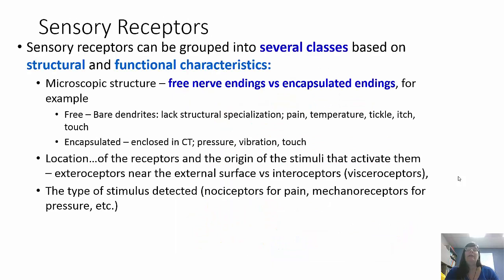Sensory receptors can be grouped into several classes based on structural or functional characteristics. By microscopic structure, we have free nerve endings or encapsulated endings. Free nerve endings do not have any coverings — they are bare, uncovered dendrites, detecting pain, temperature, and tickle. Encapsulated endings are enclosed in connective tissue and are used for pressure, vibration, and touch.